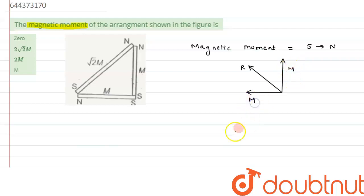So we can write the resultant as under root of M squared plus M squared, which is under root 2M. Now we can see this resultant of these two magnets is perpendicular to the magnet having dipole moment as root 2M.